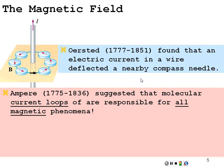André Ampère suggested that molecular current loops are responsible for all magnetic phenomena. And even though the atom had not yet been proposed, he was correct. As you go down into the atom where electrons are moving around — electric charges are moving, changing their electric field — that is the ultimate source of magnetic fields at that scale.